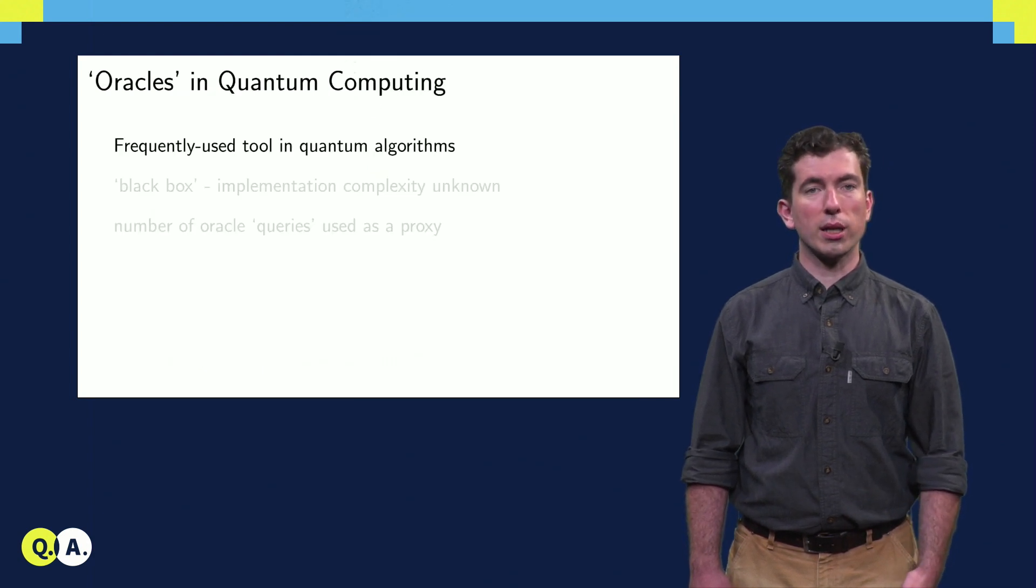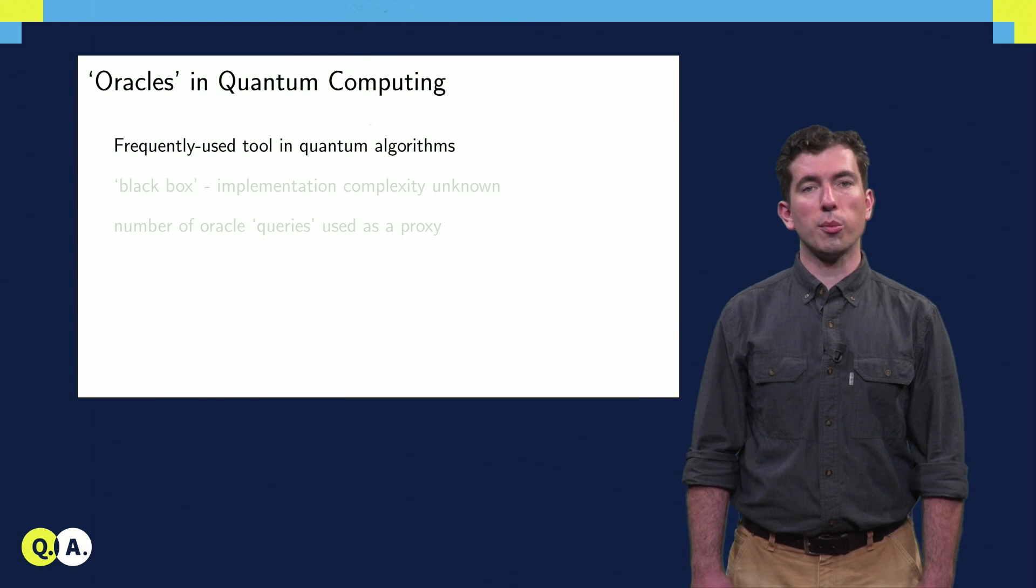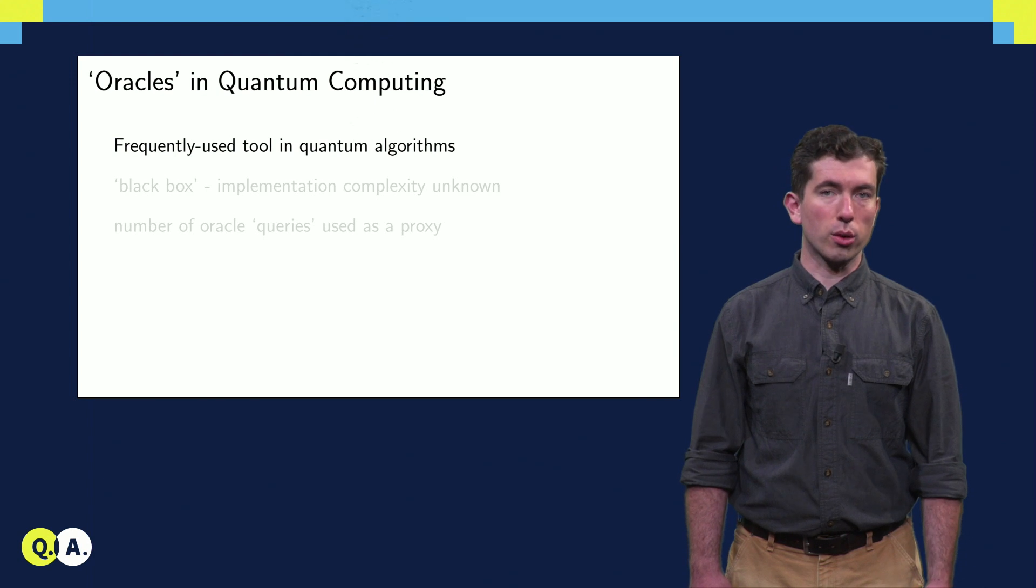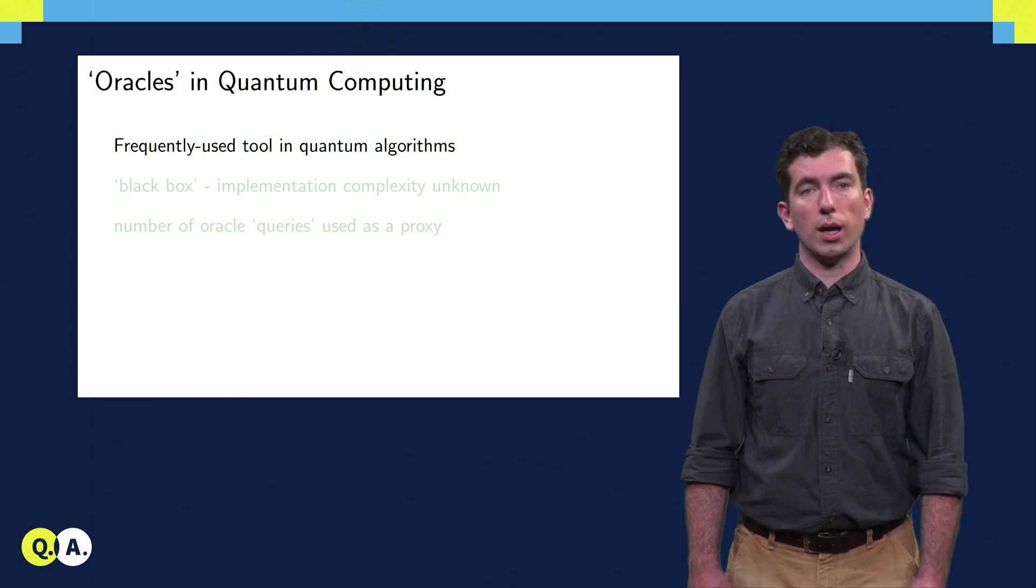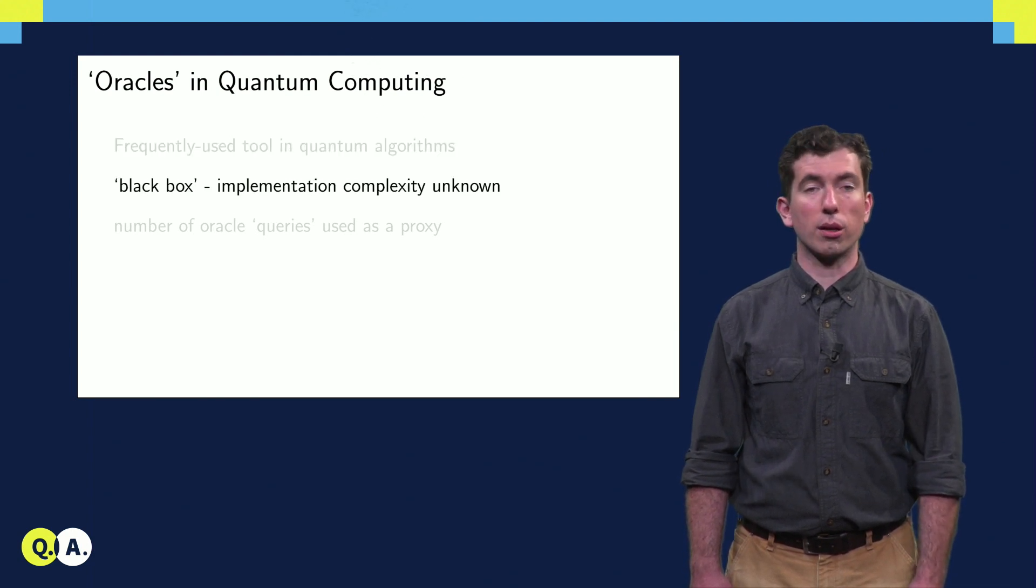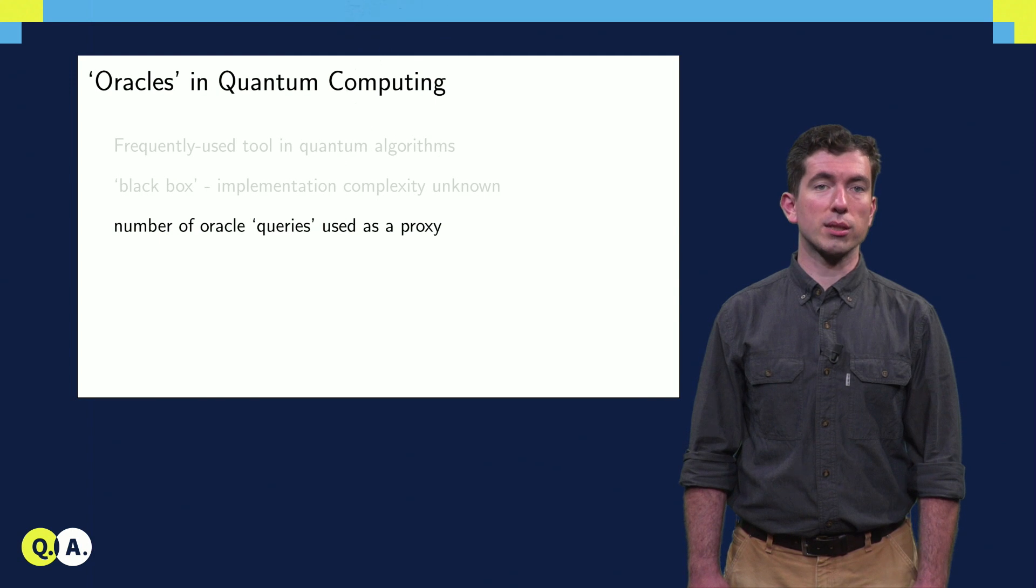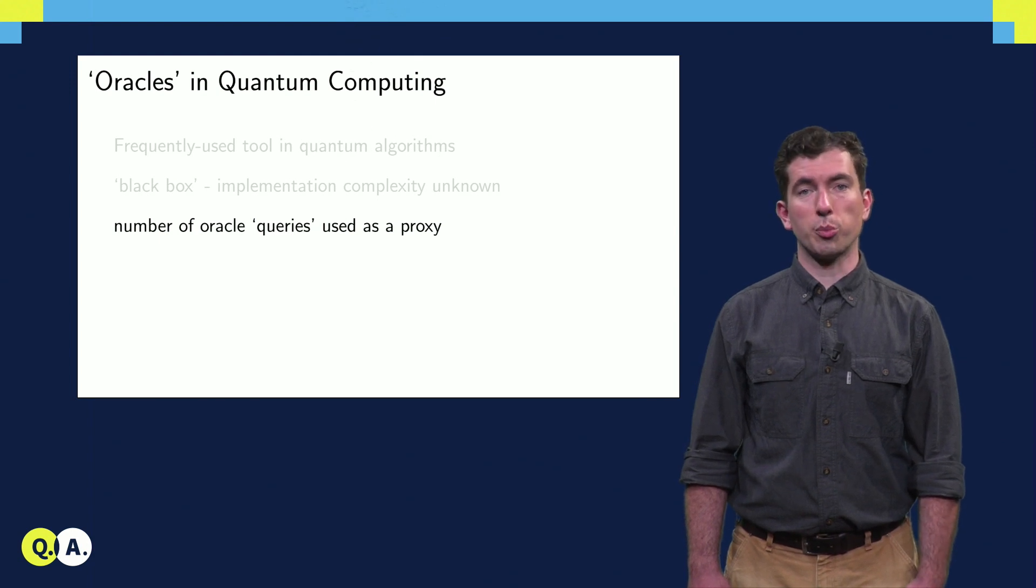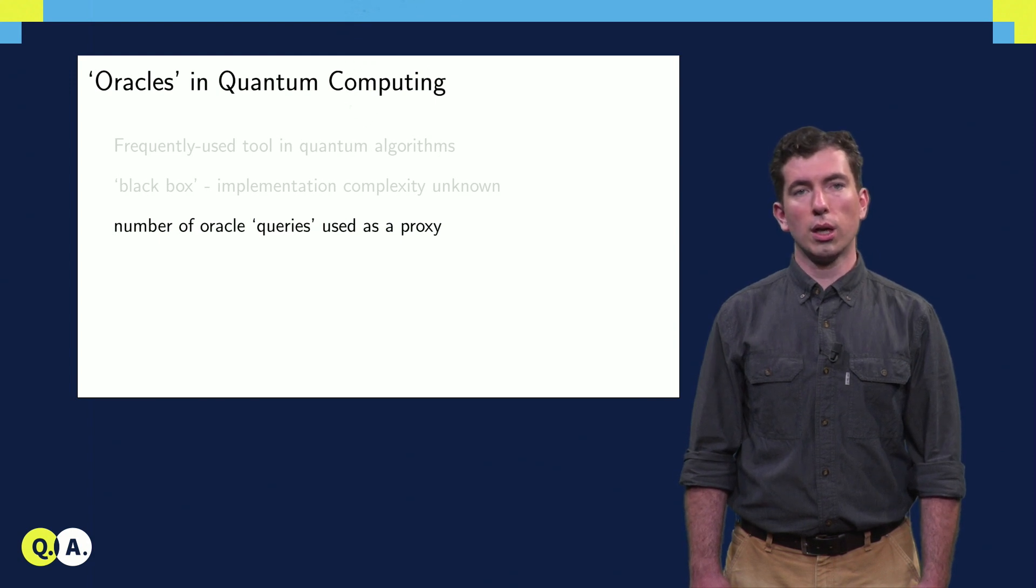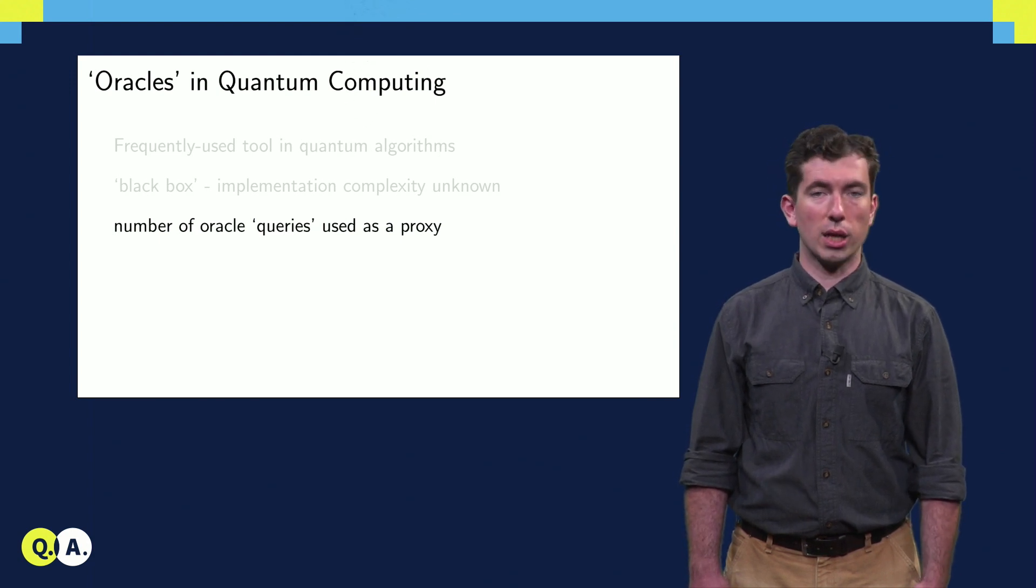To lay out the corresponding quantum algorithm, we're going to need to make use of another building block, the oracle. Oracles are used in many different quantum algorithms when the complete implementation of a given function is unknown. An oracle is a black box that we can prove is unitary, though we don't know the circuit complexity of its implementation. In place of a proper complexity, which is worked out in terms of the space and time cost of running a quantum circuit, we use the number of queries to the oracle, which is the number of times that it's used as a proxy.